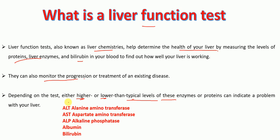What are the different types of tests that are included in a liver function test? They include, for example, ALT test — that is alanine aminotransferase test — AST test — that is aspartate aminotransferase test — ALP test — that is alkaline phosphatase test — test of albumin, and test of bilirubin.